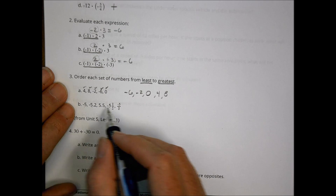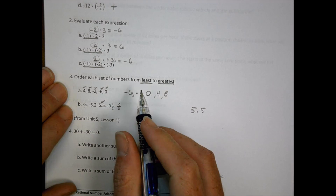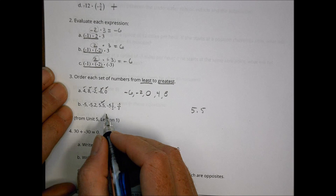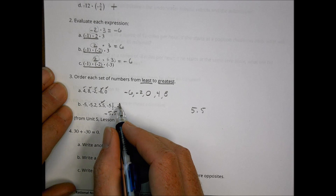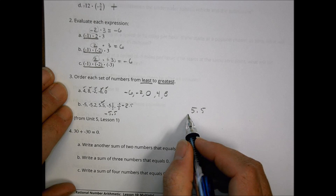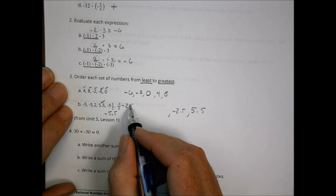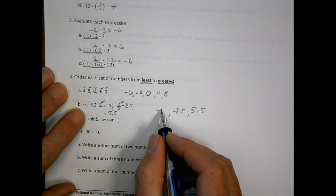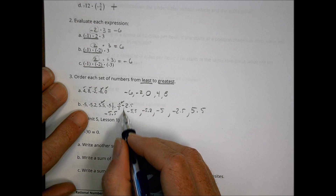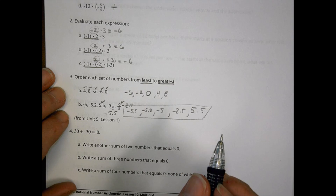Part B might be a little trickier. I have lots of negative numbers and one positive. The biggest number is 5.5. Looking for the smallest: I have negative 5, negative 5.2, negative 5 and a half (which equals negative 5.5), and negative 5 over 2 which is actually negative 2.5. Converting to all decimals: the order from least to greatest would be negative 5.5, negative 5.2, negative 5, negative 2.5, and then 5.5.